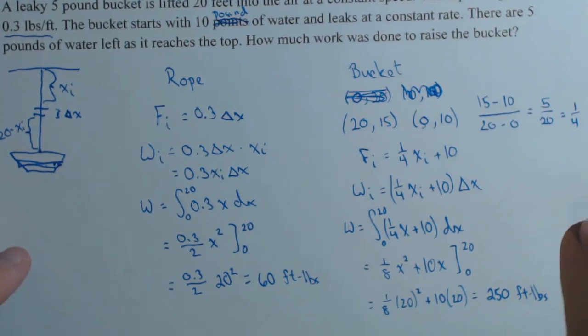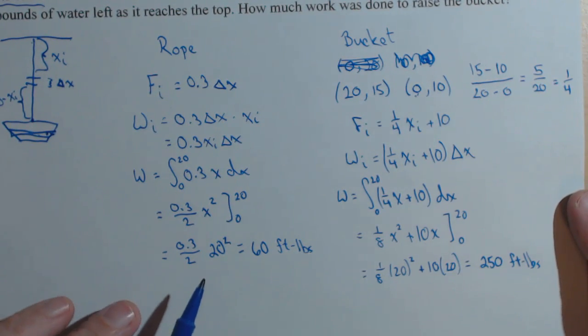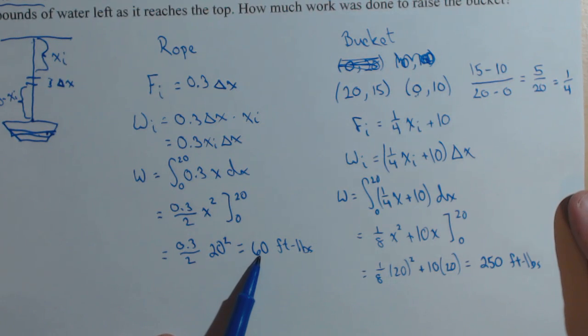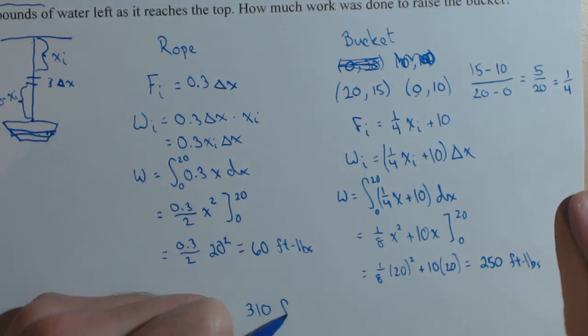And that's for just the bucket. So the total, we have to add these together, the 60 plus the 250. So the total is 310 foot-pounds.